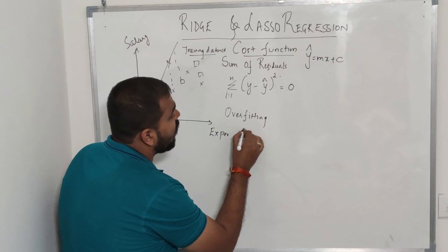We can use ridge and lasso regression to address this overfitting condition, which is essentially high variance. We can convert this high variance into low variance. Always remember: a good generalized model should always have low bias and low variance. So let us understand how ridge and lasso regression solve this problem.